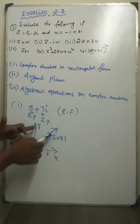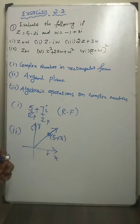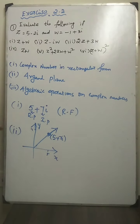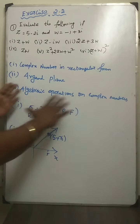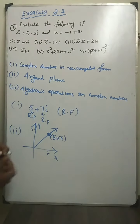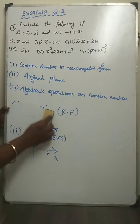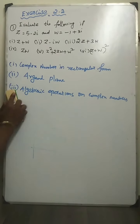Algebraic operations on complex numbers are very simple — addition, subtraction, multiplication, and division. These four calculations are the basic algebraic operations on complex numbers.